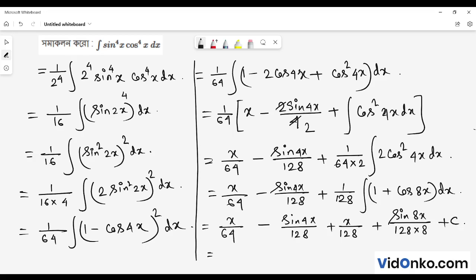Continuing the integration, we get 1 by 128 times 3x minus sin 4x, plus integration terms involving sin 8x by 8.